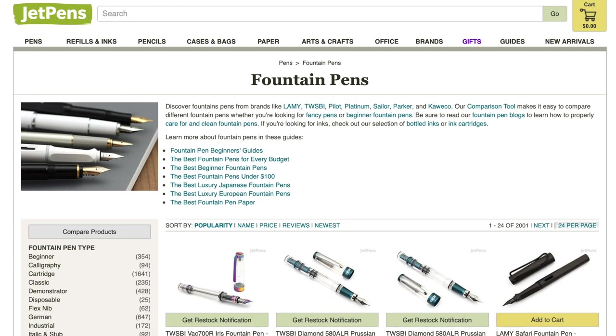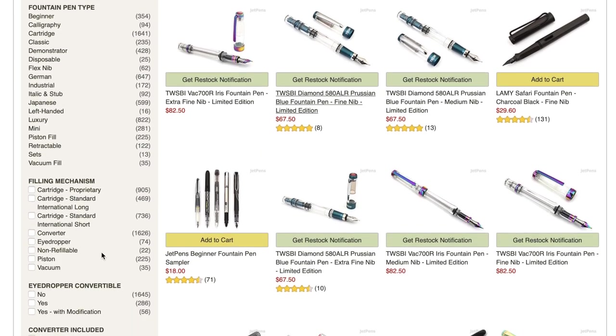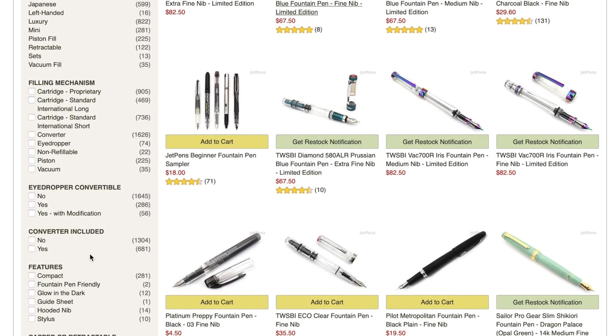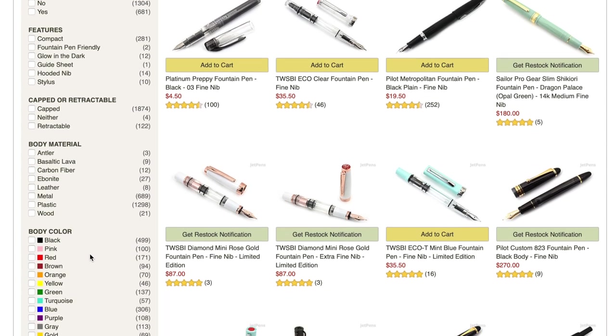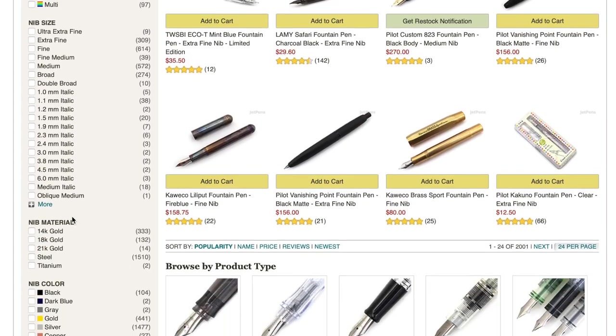So I'm using JetPens right now, but you can actually use your own website of choice. It could be Goulet Pens or Amazon or anything like that. The nice thing about JetPens however, is that they have a filter on the left-hand side of the screen. As you can see, you can filter pens by material, by color, nib, and so on.